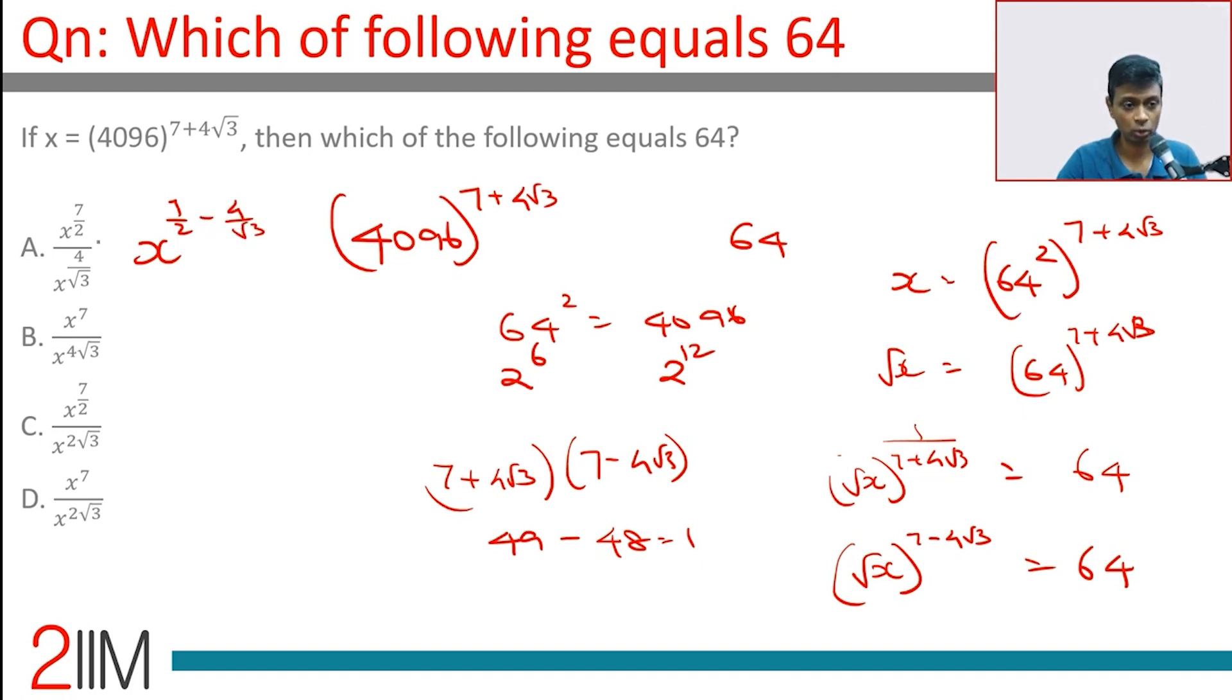So it should be 4 root 3, sorry, it should be 4 by root 3. It's tough to reconcile. This is x power 7 minus 4 root 3, this is also incorrect. To be square root of x to the power 7 minus 4 root 3, this is x power 7 by 2 minus 2 root 3. Yep, this is x power 1 by 2, whole to the power 7 minus 4 root 3.